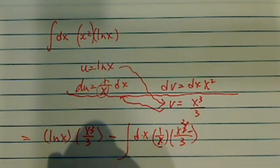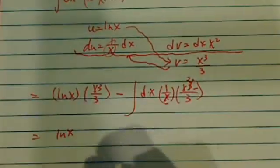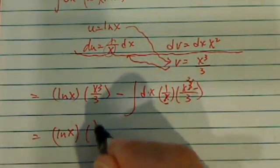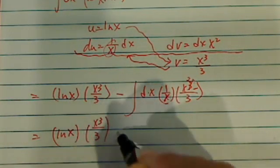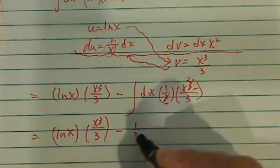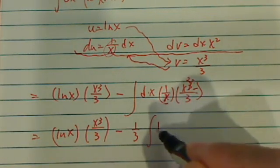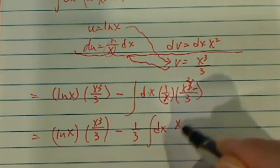So this term doesn't change. Natural log of x, x cubed over 3 minus what I have over here. I have a 1 third. Let's drag it out. So I have a dx over here, and then I have x squared.